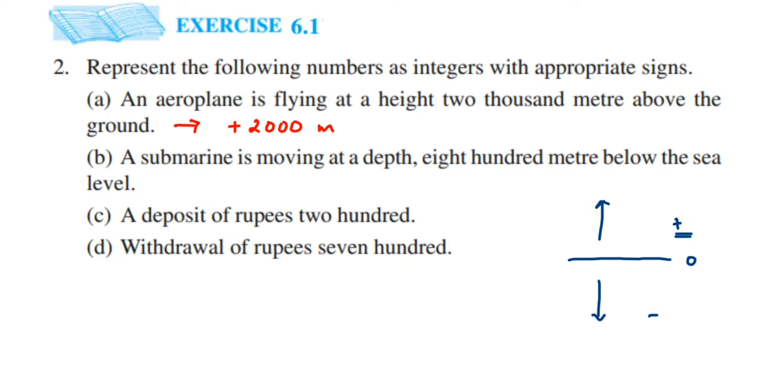Now the next one, the second one is the opposite of the first. A submarine is moving at a depth 800 meters below the sea level. Again, it's like opposite to the first question. The sea level will be zero here, below will be negative and above will be positive. Since the submarine is going below the sea level, it will be minus. So the answer is -800 meters.